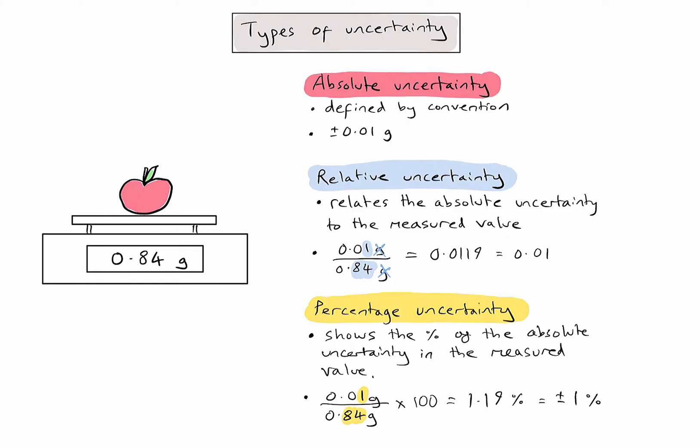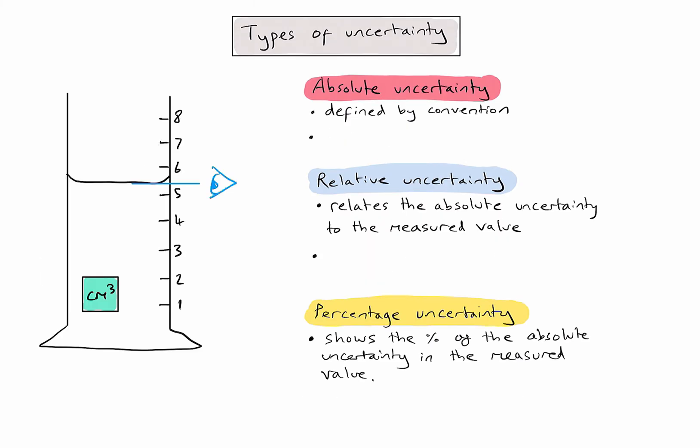Let's now have a look at a second example and go through the same process. In this example, I'm using a piece of analogue equipment — in this case, a graduated cylinder.